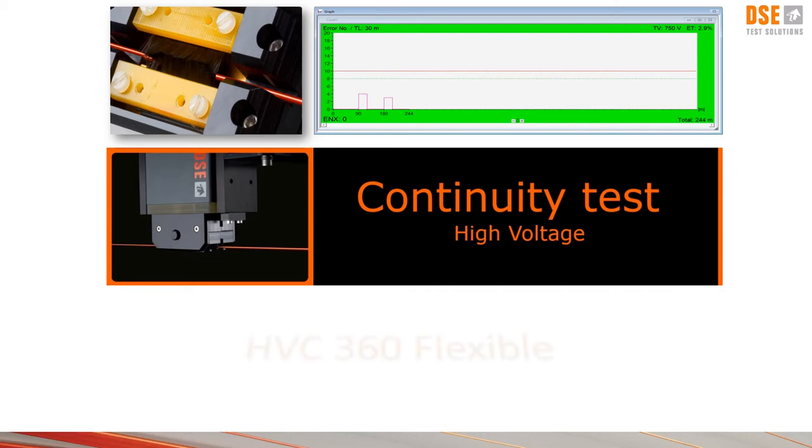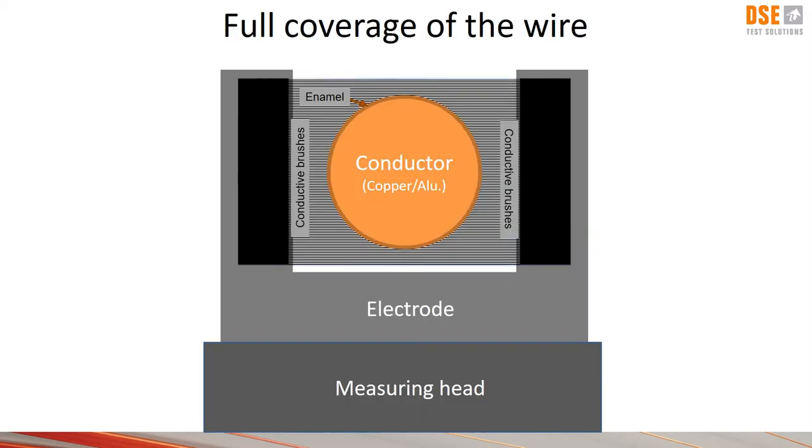The model we talk about today is called HVC 360 flexible. It is a measuring head which can be combined with one of three different sets of electrodes we offer. What's in common is they're using conductive brushes to cover the full surface of the wire. Since the introduction in 2007 it has been an important tool for securing the quality for manufacture of enamel wire and the use of wire as well.